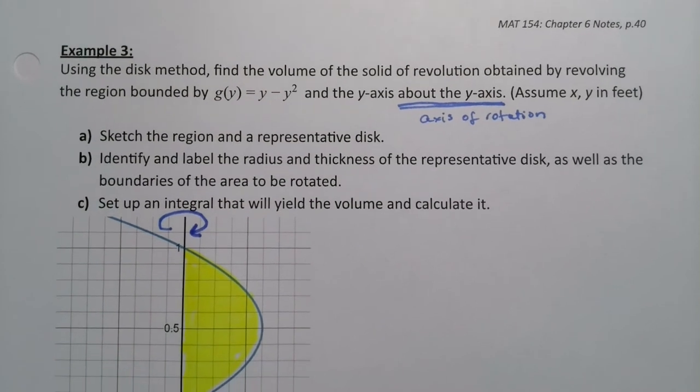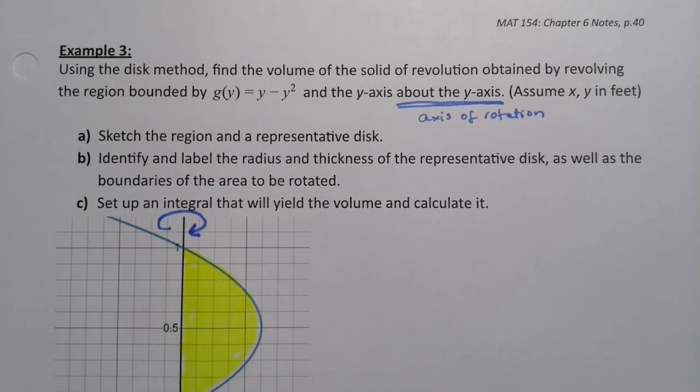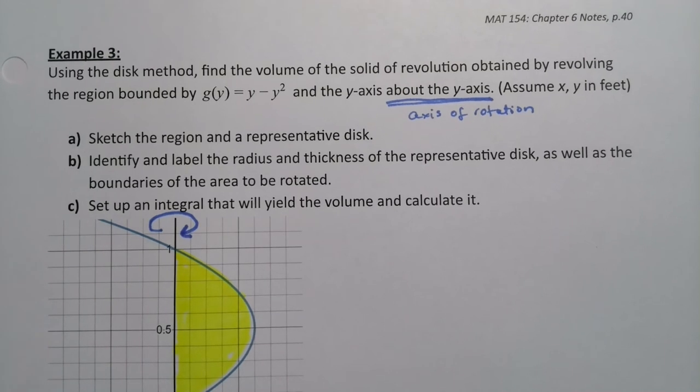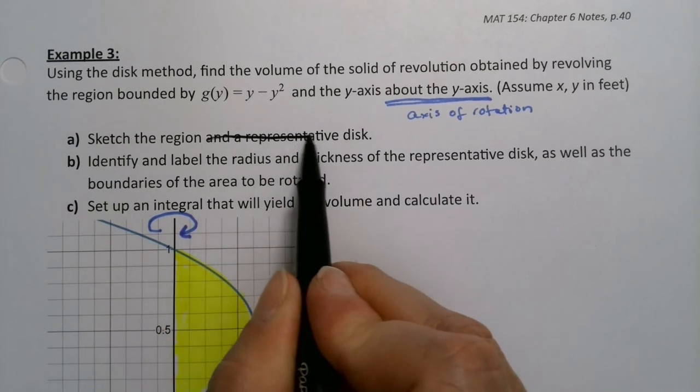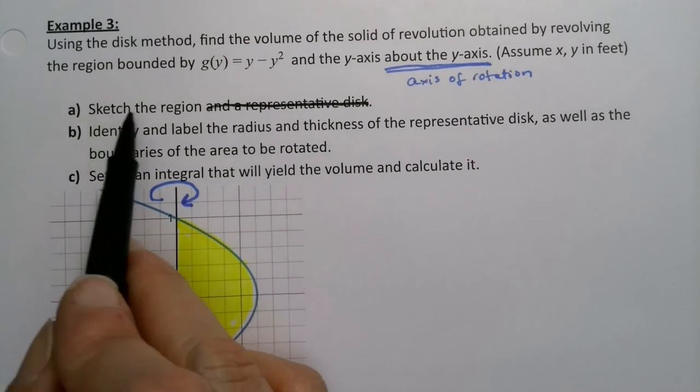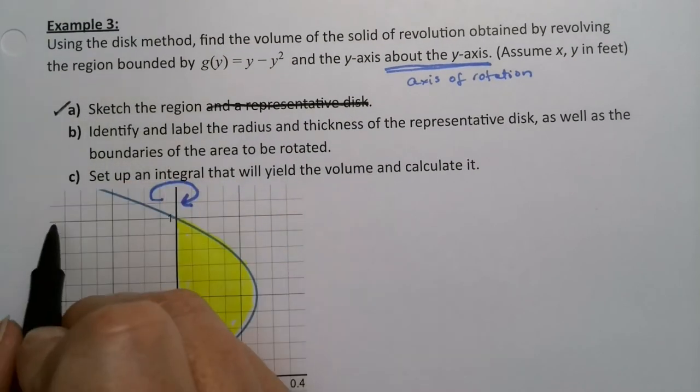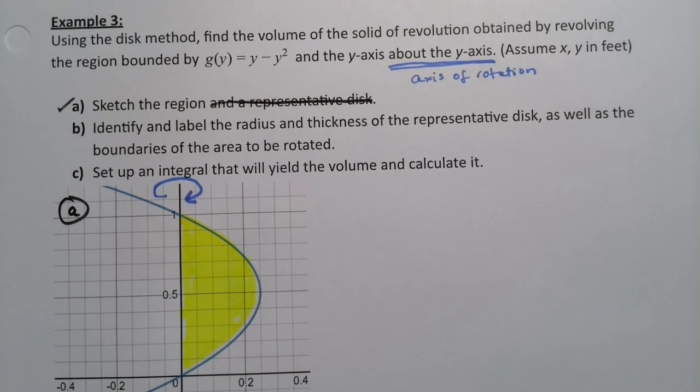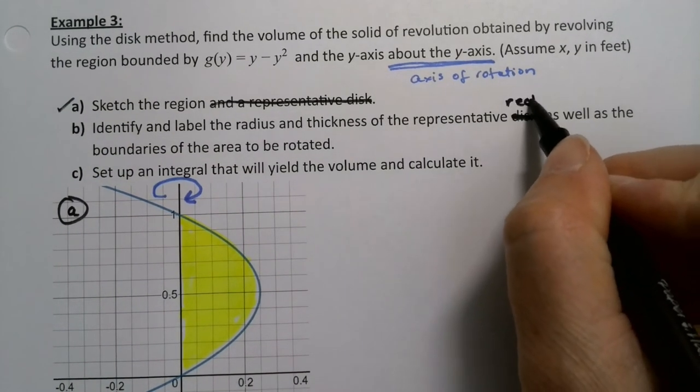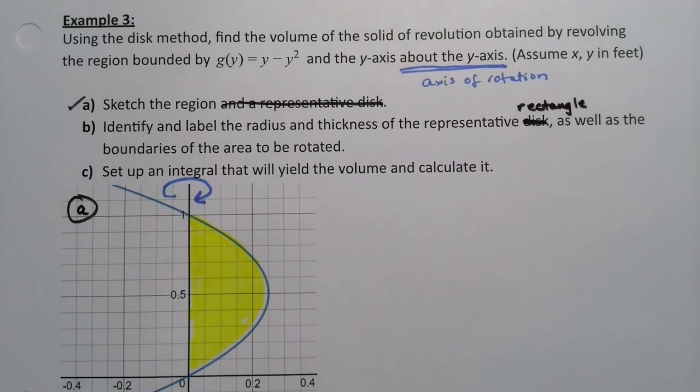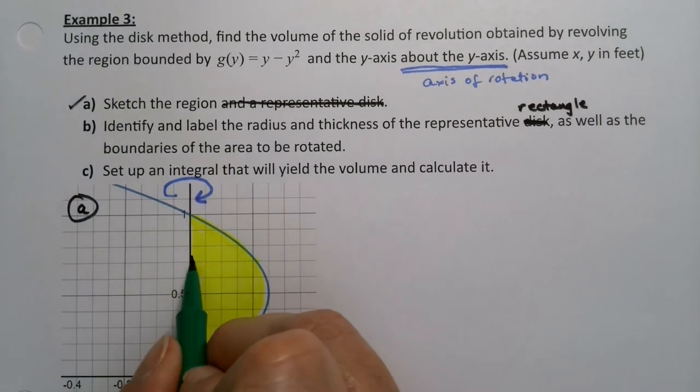I've got my axis of rotation noted. I've got my region. I want to sketch a region and identify a representative rectangle. I've got my region checked, that's already done. So that's part a, rotated lovely. I'm going to identify the rectangle. We want to show a rectangle and then show it rotated, labeled, and then rotated.